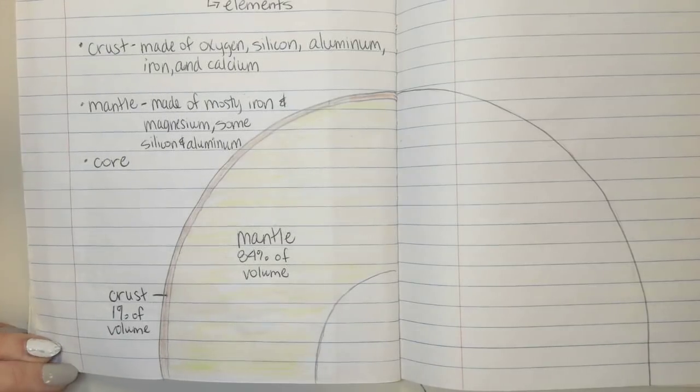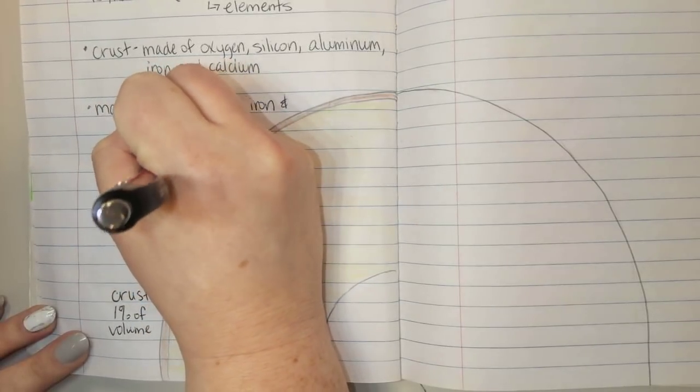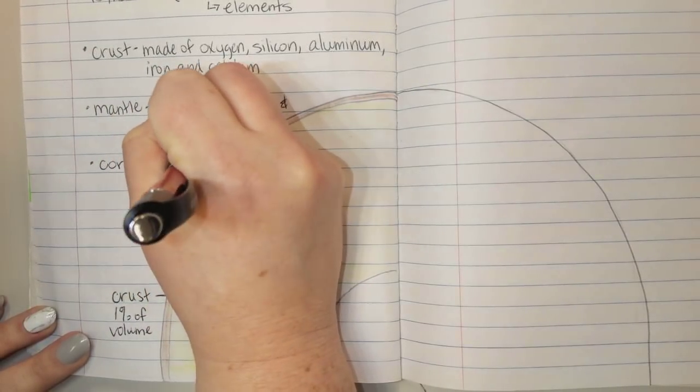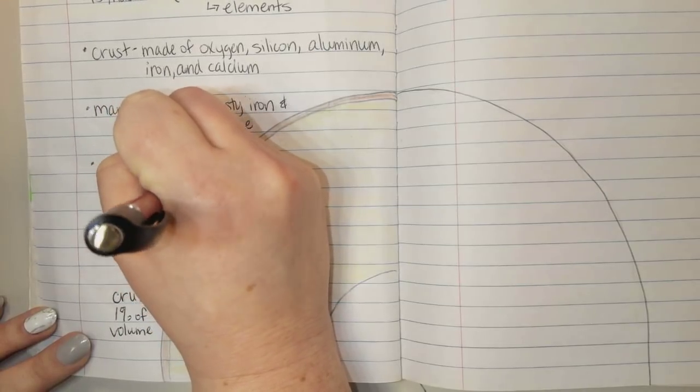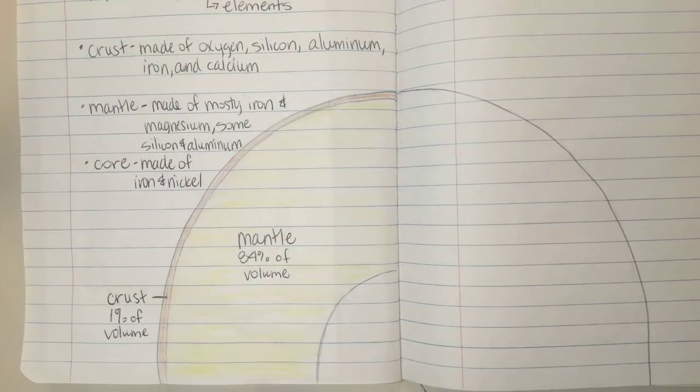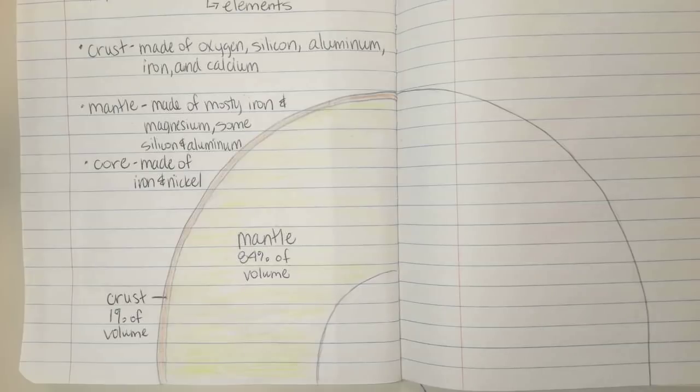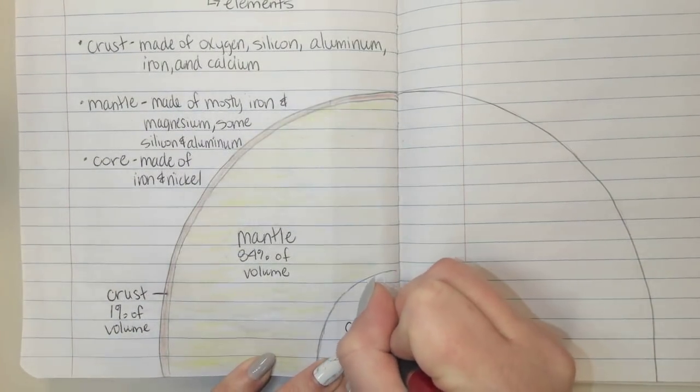The core is made of iron and nickel. Both elements on the periodic table. Iron and nickel are both metals, so the core of the earth is actually made up of metals. I'm going to go ahead and label it down here. This is the core.